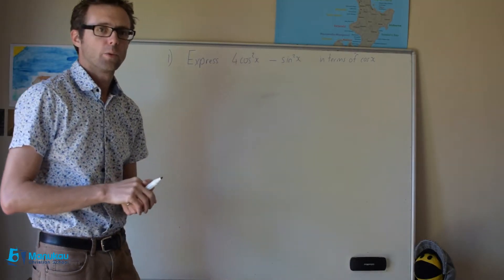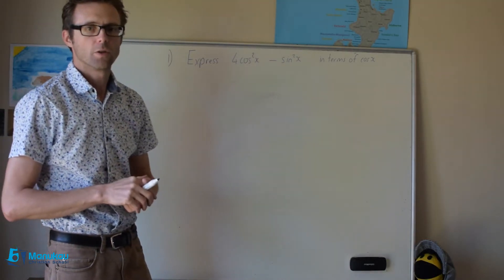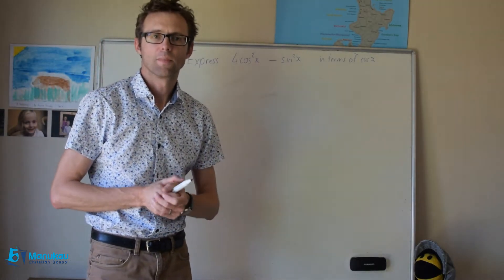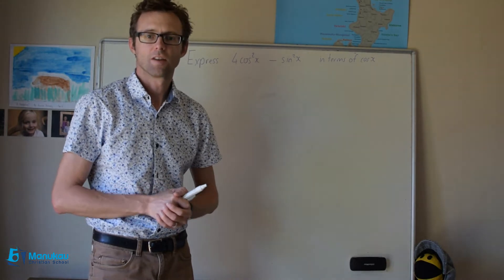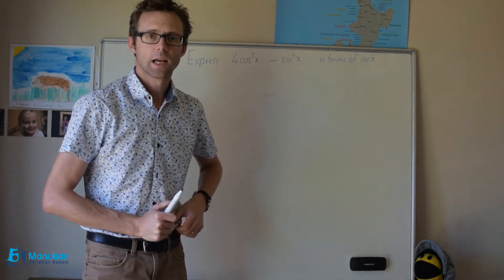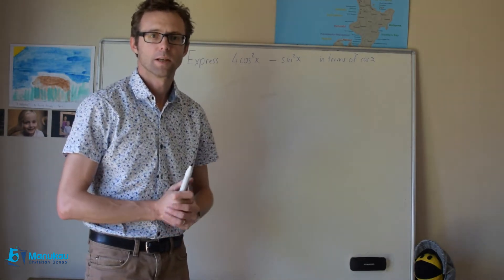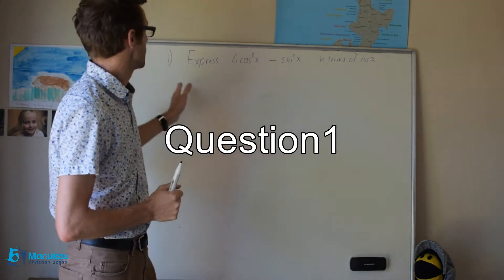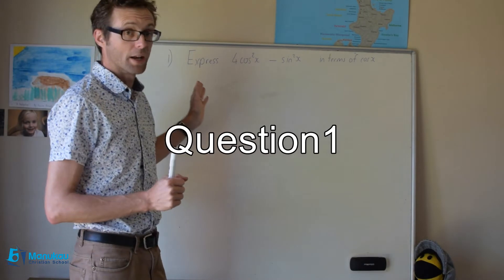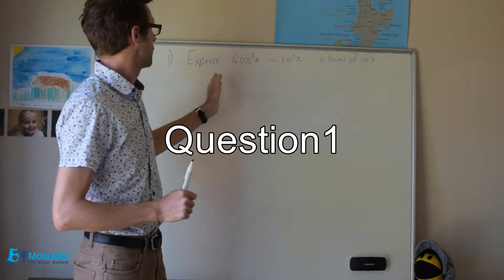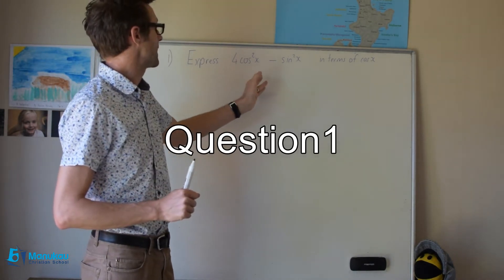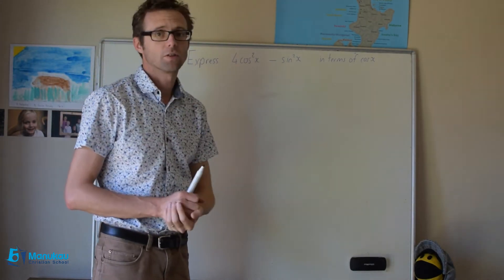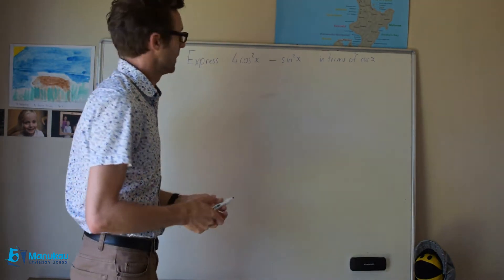In this video, we're going to look at a few of the questions that some of you have had from exercise 5.6. I'm going to whip through them. This is our first question, number one: express four cosine squared x minus sine squared x in terms of cosine x.